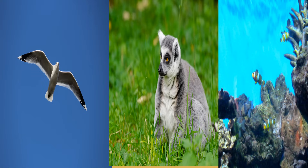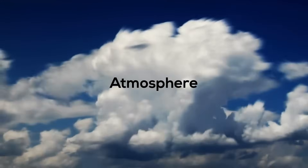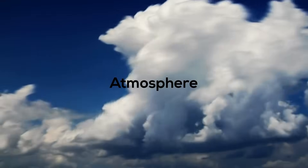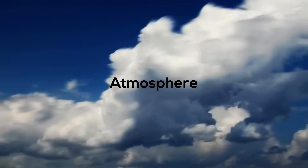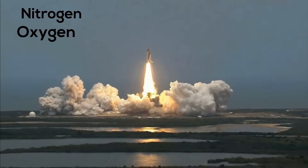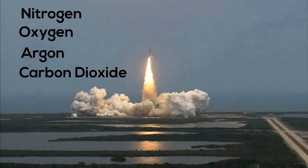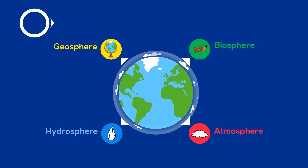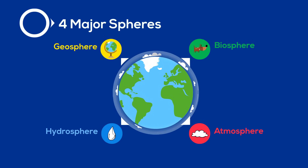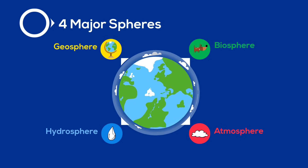And finally, our atmosphere is the layer of gases surrounding our planet. The atmosphere of the Earth is composed of nitrogen, oxygen, some argon, carbon dioxide, and some other gases in small amounts. These gases are held in place by the pull of gravity. So there we go — the four spheres of the Earth: the geosphere, the hydrosphere, the biosphere, and the atmosphere.